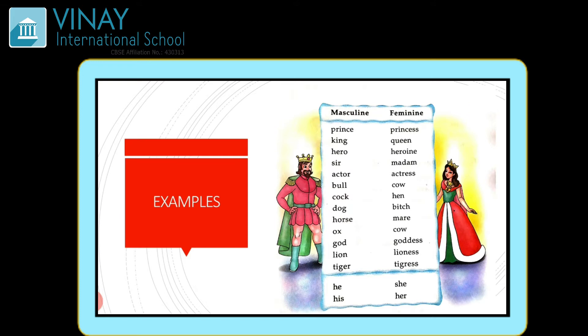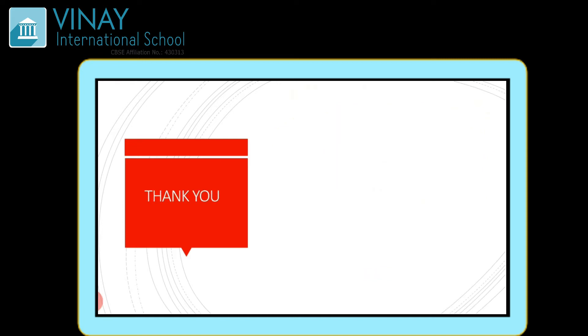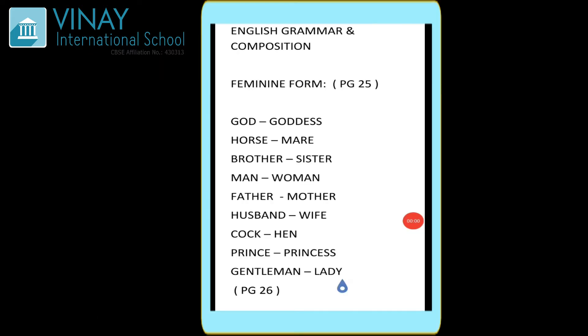And if I say mom or mommy, woh ho jaega feminine. Agar mein aapko yeh bhi bolun — if you are a boy, toh aapki koi sister hai — toh boy is a masculine and the girl is feminine. Agar aapka ek bhai hai, the brother is masculine, and us brother ki ek sister hai, so the sister is feminine. So in short, 'he' words are called words of masculine gender and 'she' words are called the feminine gender. That was all for the day, thank you.